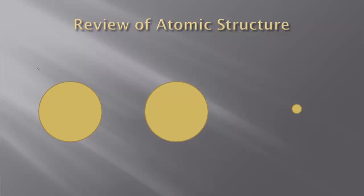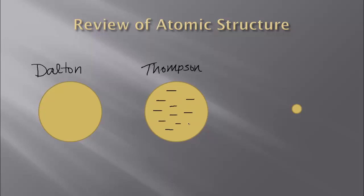We started off with Dalton, and Dalton believed that the atom was the smallest piece of matter. It was indivisible and basically a solid sphere. Then we move on to Thomson. Thomson elaborated on this solid sphere and said it's not really a solid sphere because it has this negative charge. So we must have a negative charge within this atom, because all elements had this negative charge.